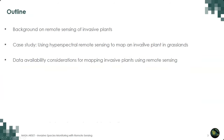Here's the outline of this talk. First, I'm going to provide a brief background on remote sensing of invasive plants. Then I'm going to present a case study that we did a few years ago, where we used hyperspectral remote sensing to map an invasive plant in grasslands. And finally, I'm going to talk about data availability considerations for mapping invasive plants using remote sensing.